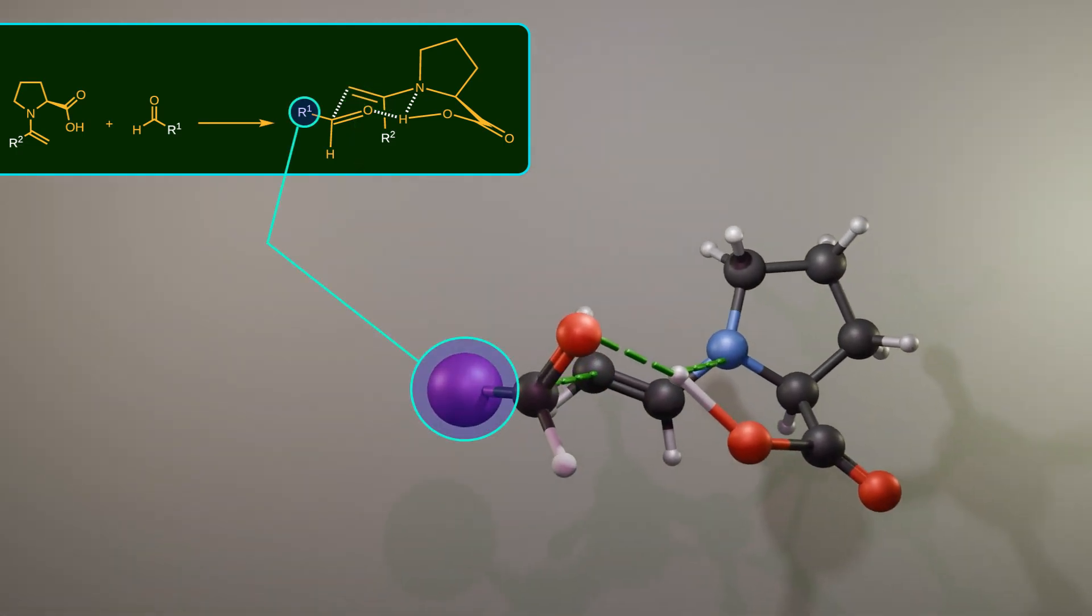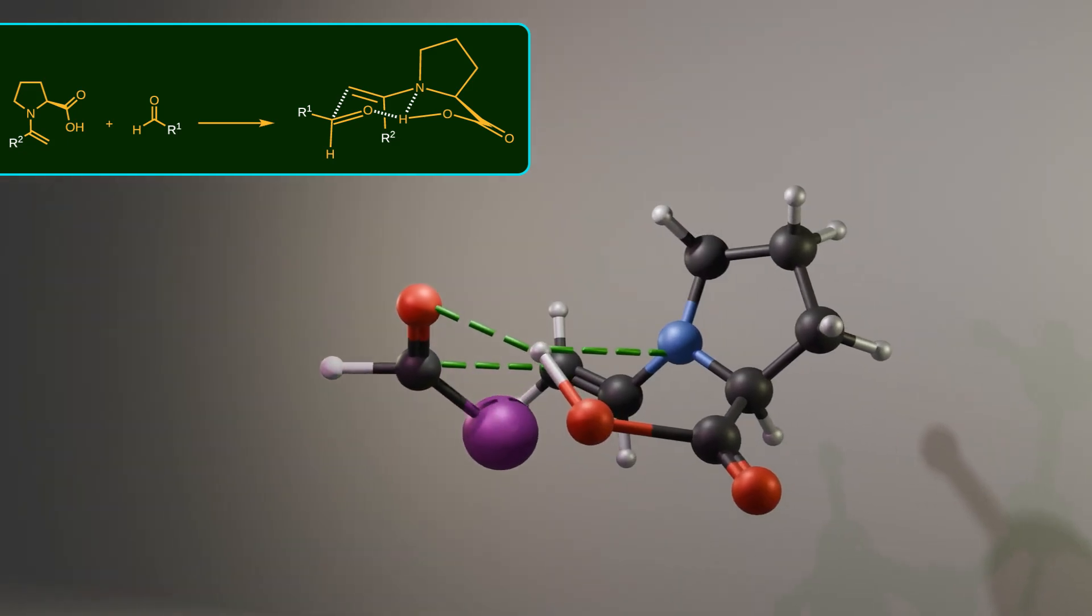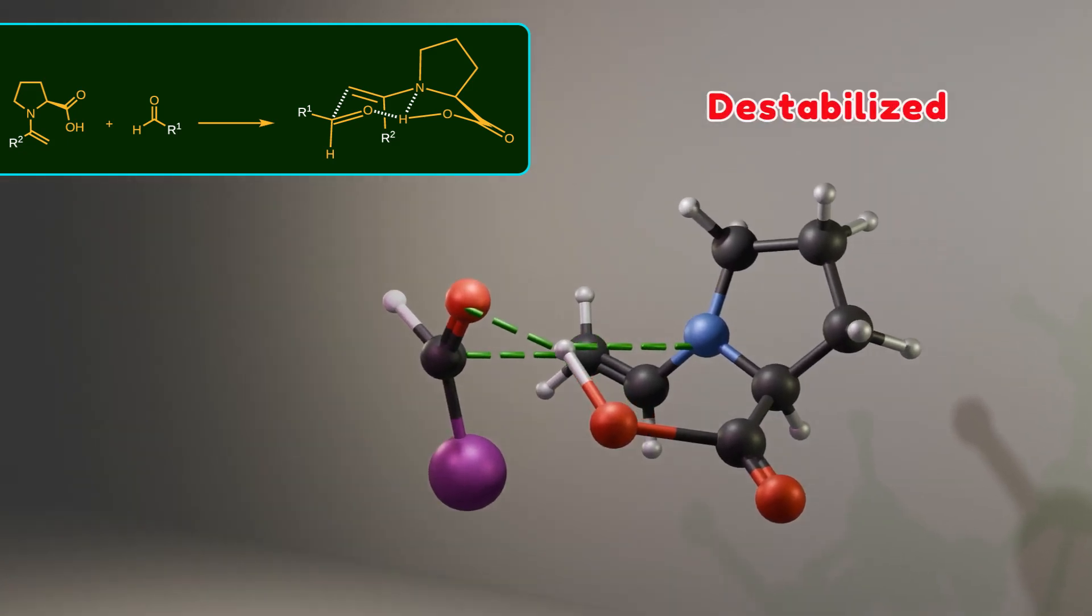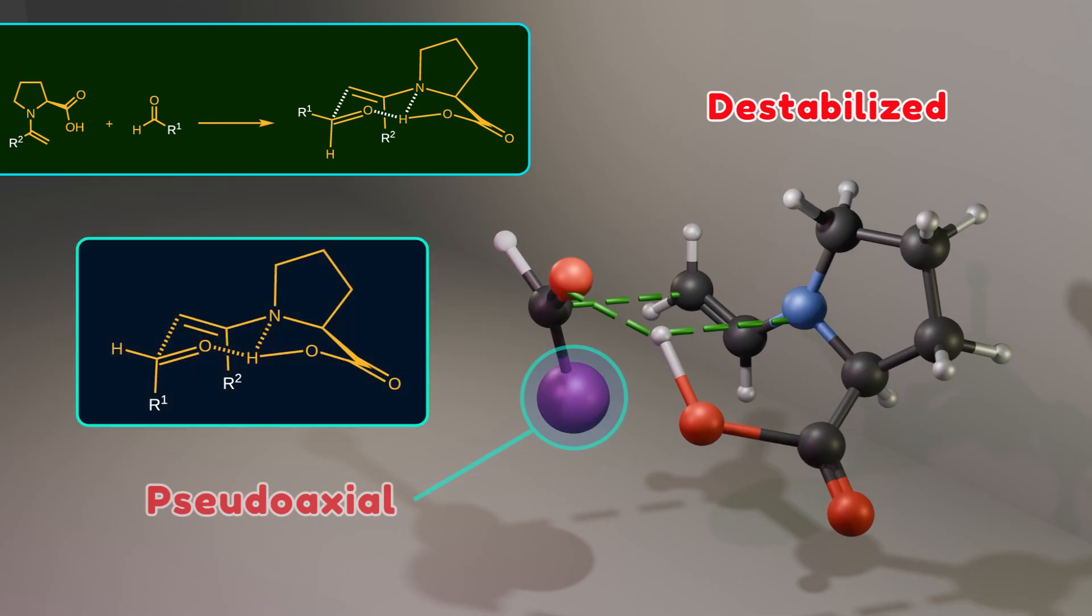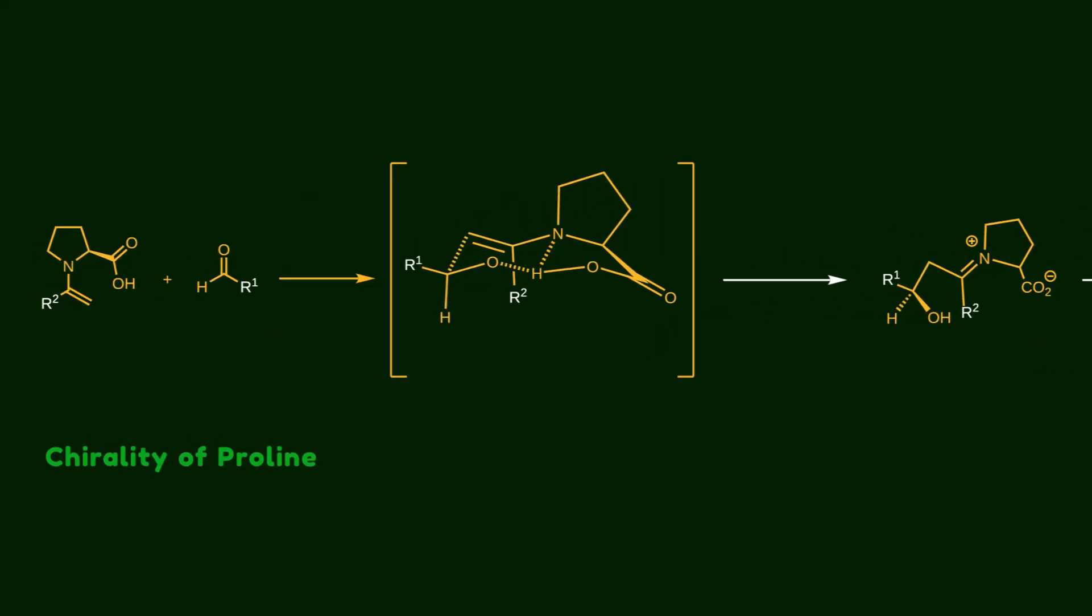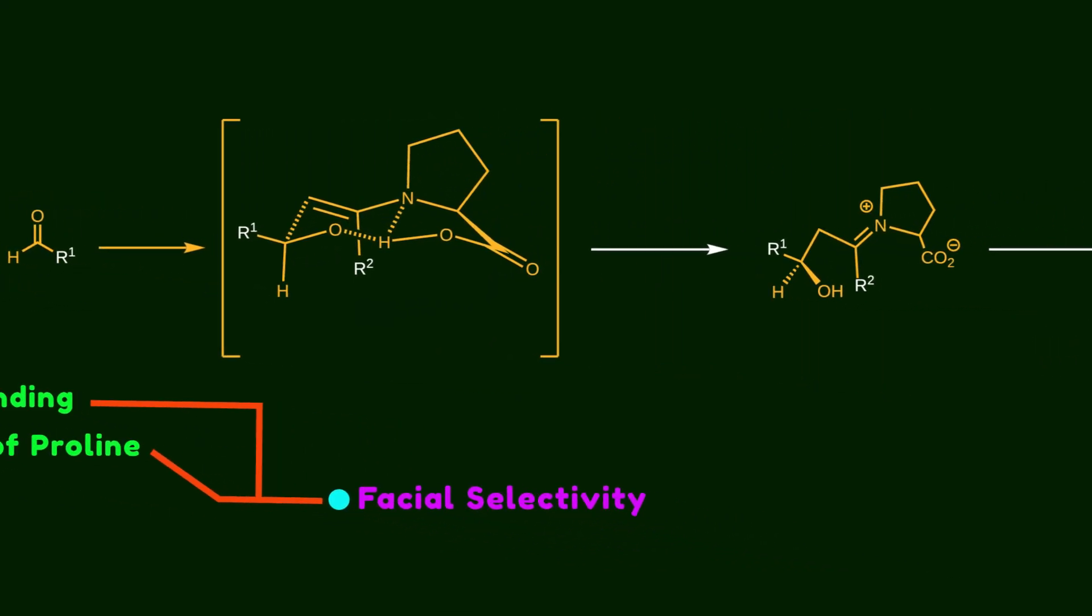Why? Because the R group of the aldehyde prefers to sit in the pseudoequatorial position. Let's rotate the aldehyde so that the opposite face is attacked instead. This new transition state becomes destabilized because the R group is now in a pseudo-axial position, leading to a serious 1,3-diaxial interaction. So the hydrogen bonding and the chirality of proline are what drive this facial selectivity.